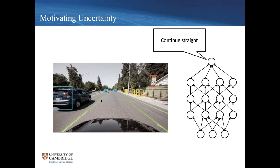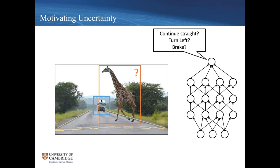It outputs actions like turn left, turn right, straight, or brake. In this image we have quite a typical driving road scene, so you'd hope the neural network would say it's seen this before and just keep going straight — there's nothing too strange going on. On the other hand, we might have quite a different situation: maybe the system has been trained on urban streets and suddenly there's a giraffe crossing the road.